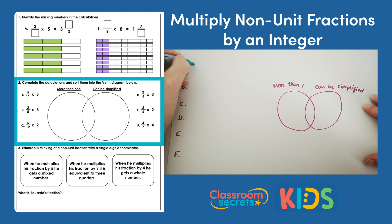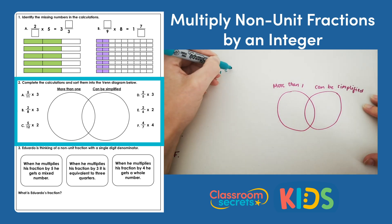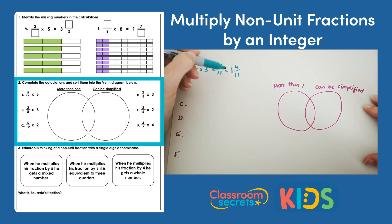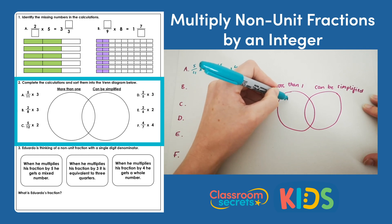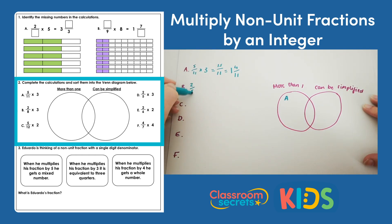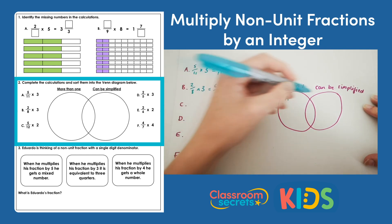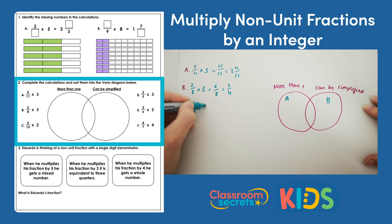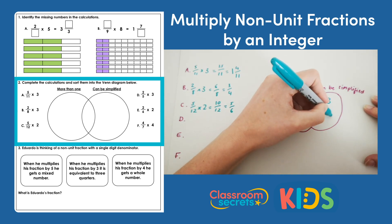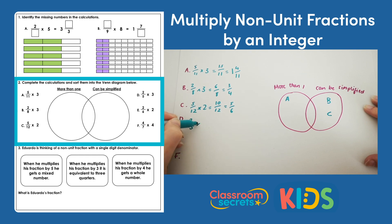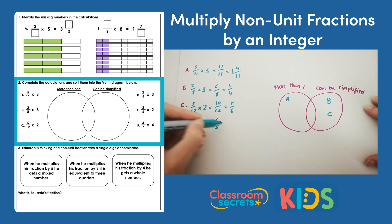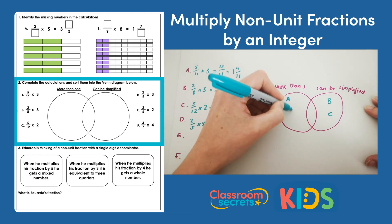A: 5 elevenths times 3 gives me 15 elevenths, which is the same as 1 and 4 elevenths. It's more than 1 and cannot be simplified, so a goes in the 'more than 1' section. B: 2 eighths times 3 is 6 eighths, which simplifies to 3 quarters. So b can be simplified and is less than 1, so it goes in the 'can be simplified' section. C: 5 twelfths times 2 is 10 twelfths, which is the same as 5 sixths — it can be simplified, so c goes in that section. D: 2 fifths times 3 is 6 fifths, which is the same as 1 and 1 fifth, so d goes in the 'more than 1' section.